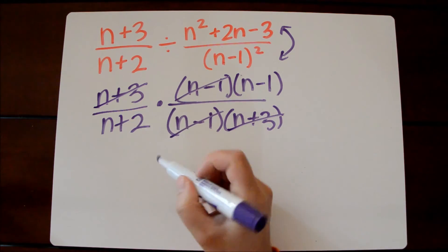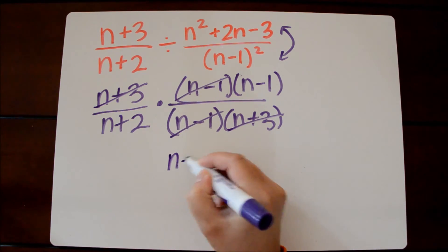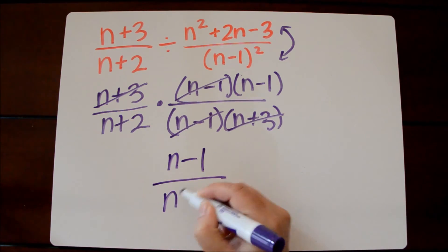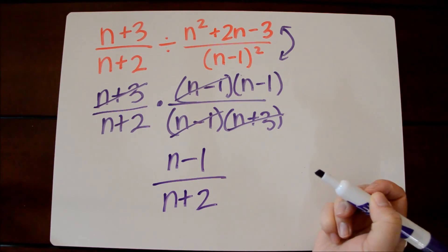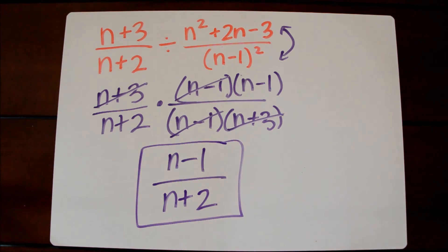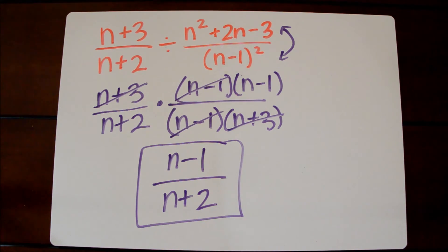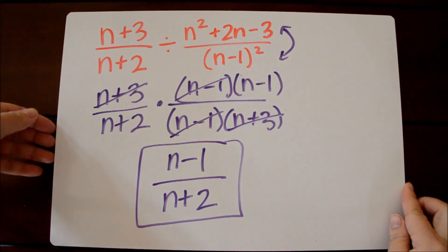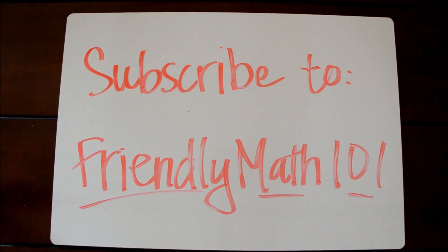And so what we're left with is in the numerator, we have n minus 1. In the denominator, we have n plus 2. And this is our simplified expression. That concludes our lesson on dividing rational expressions. If you have any questions, please feel free to leave any questions in the comments section below. And for more math tutorials, subscribe to our channel, Friendly Math 101.